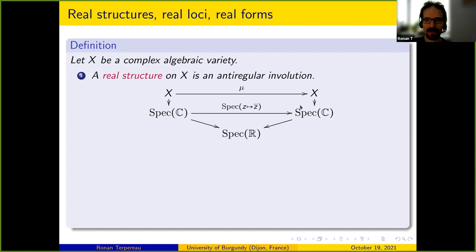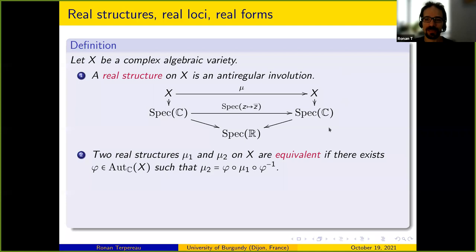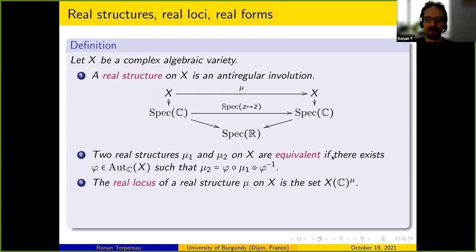Two real structures mu1 and mu2 are called equivalent if they are conjugated by a regular automorphism — so you can find a phi such that mu2 equals phi mu1 phi inverse. When you have an equivalent real structure, you can define its real locus, which is simply the set of fixed points. This set can be empty, but that's not a problem.